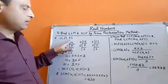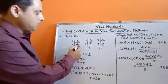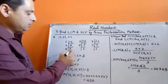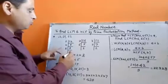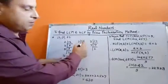First we will find the prime factors of 12, 15, and 21. So we will divide 12 by 2 to get 6. Again by 2 to get 3. Again by 3 to get 1. So prime factors of 12 are 2 × 2 × 3.